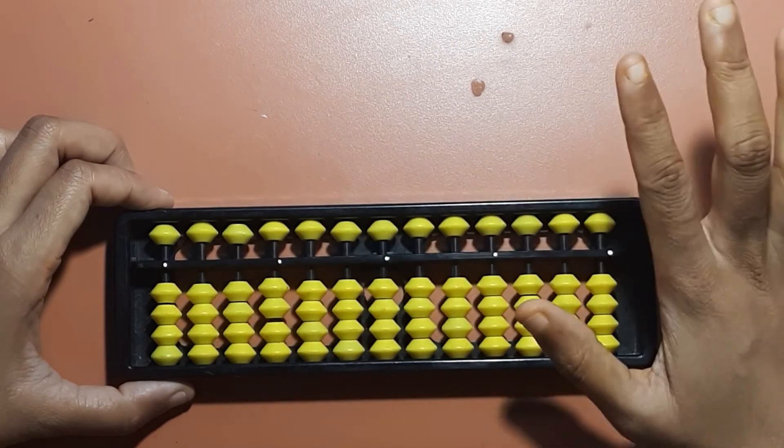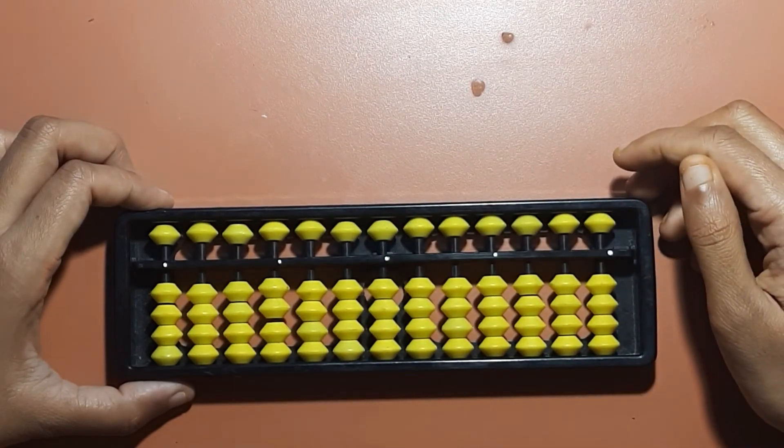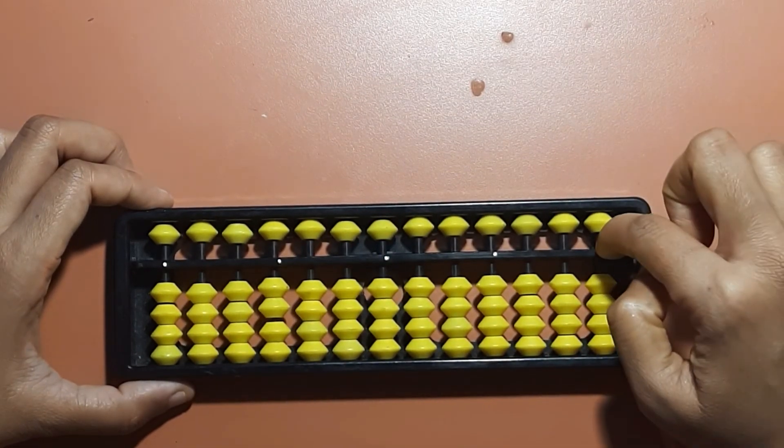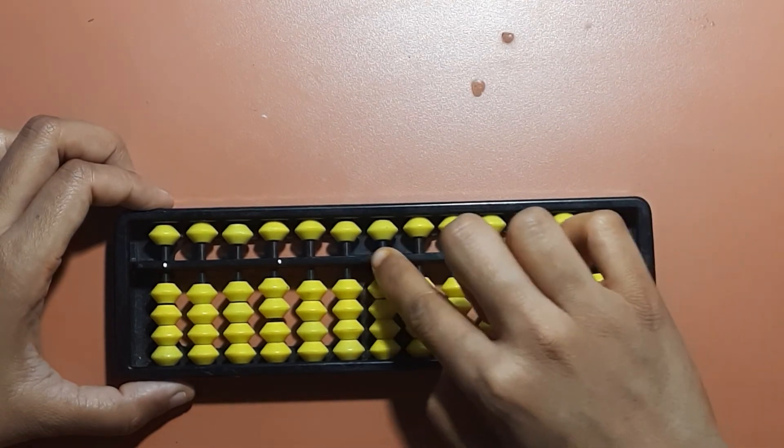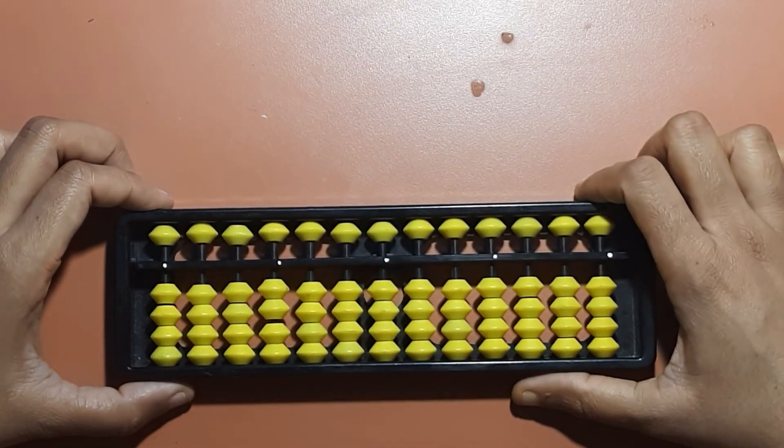I have 13 rods on this abacus. Counting the unit rods: 1, 2, 3, 4, 5. I have 5 unit rods.